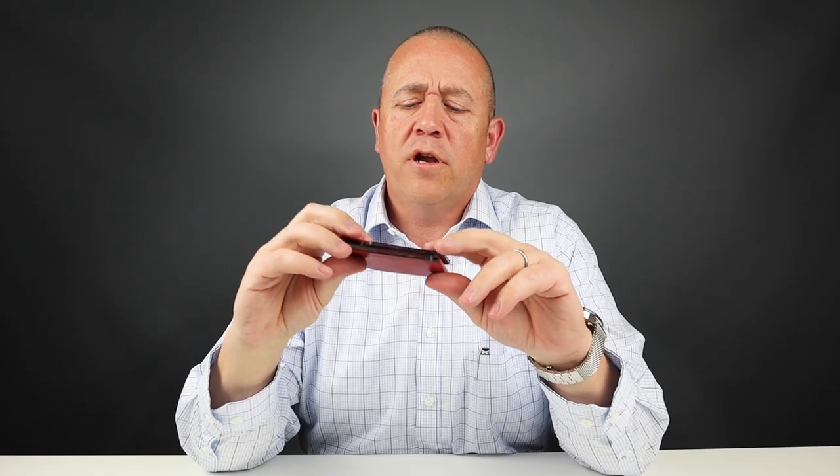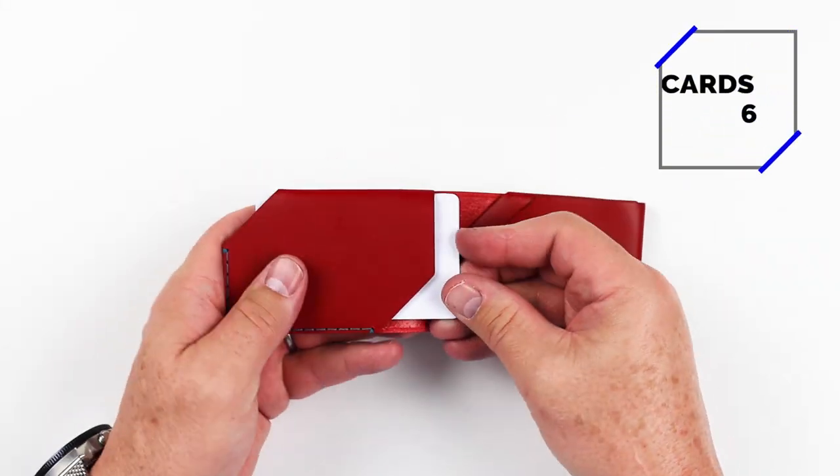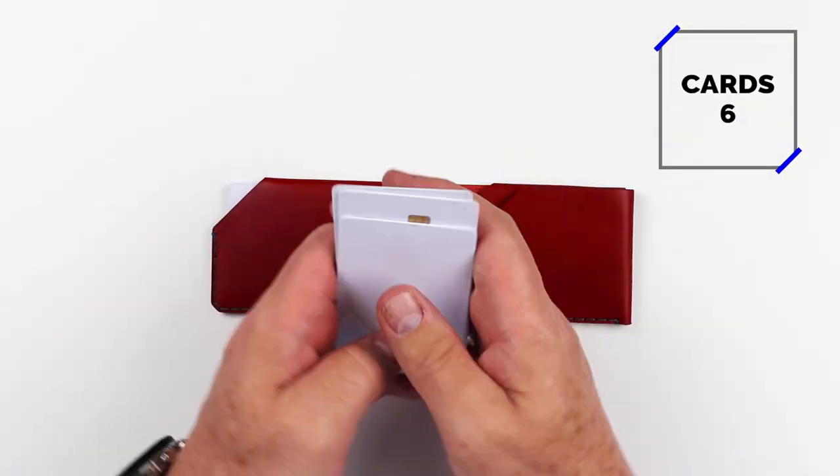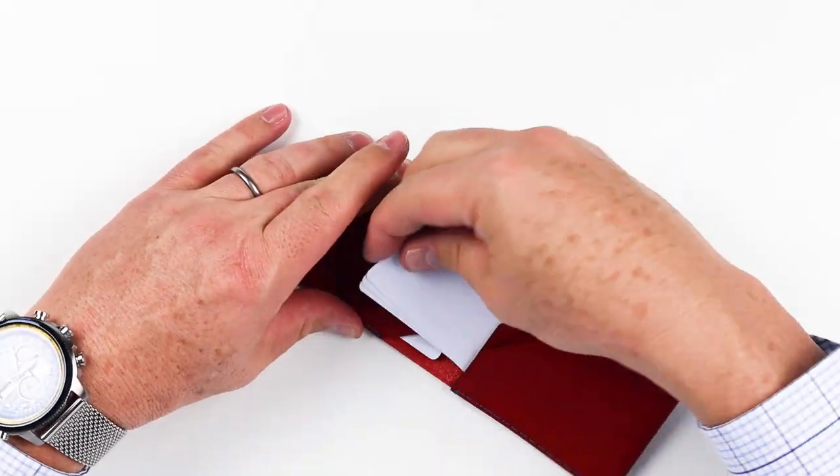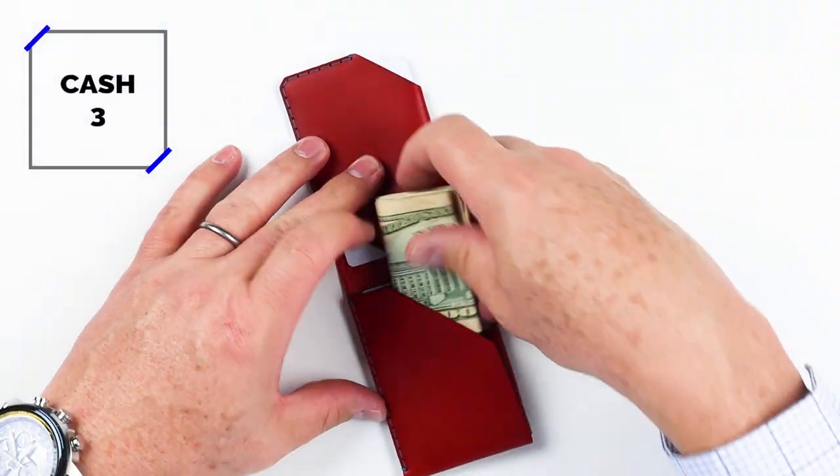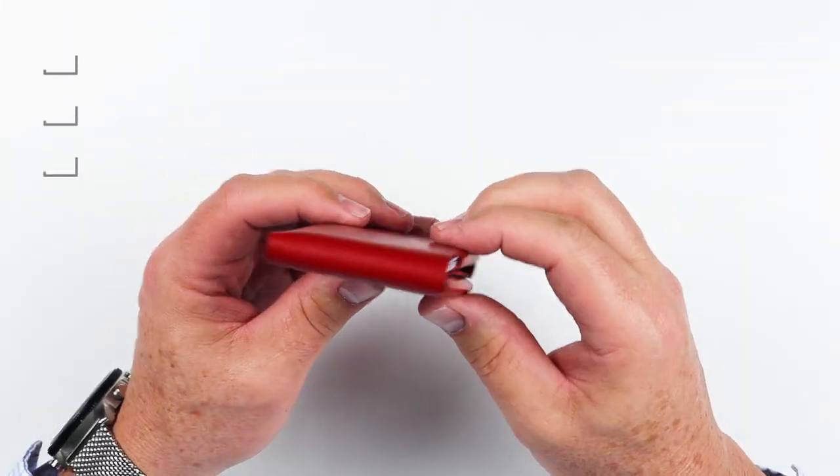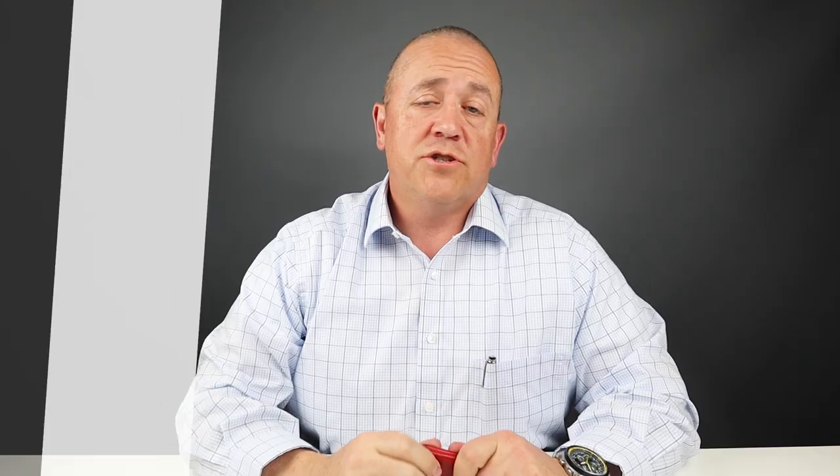So we're going to do a card and cash insertion test, but man, the leather on this is just amazing. All right, card and cash. You saw we got six cards in there, as well as three slips of cash folded over twice.